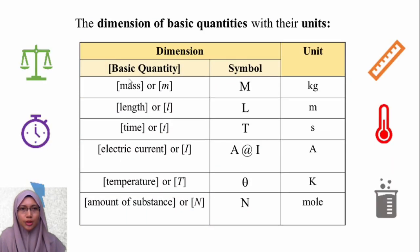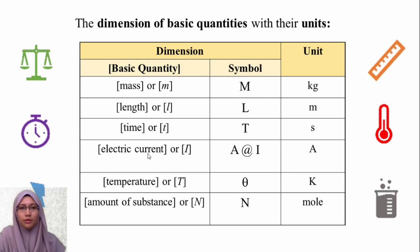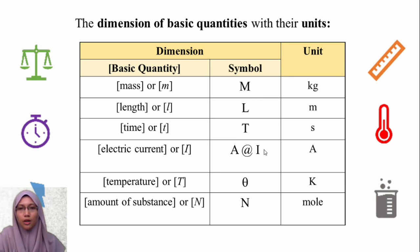These are the dimensions of basic quantities with their units. We have mass (M), length (L), time (T), electric current (A or I), temperature (Theta), amount of substance (N), and luminous intensity (N).